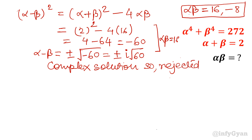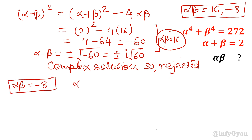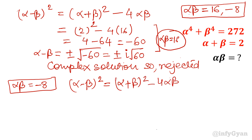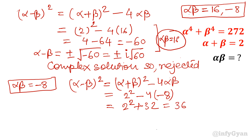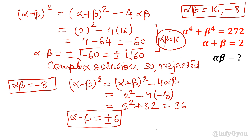Now consider the second value, alpha beta equals negative 8. Applying the same formula: alpha minus beta whole square equals 2 squared minus 4 times negative 8, which is 4 plus 32, equal to 36. So alpha minus beta equals plus or minus 6. Here we will get real solutions.